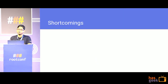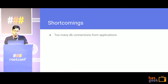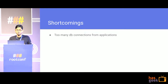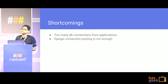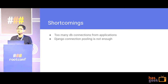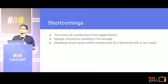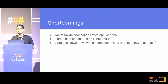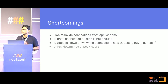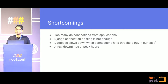However, this model has some shortcomings. Our apps end up making too many database connections. We tried Django connection pooling, but it was not enough — it doesn't scale beyond a single process, let alone multiple servers. Even with Django pooling, we ended up in situations where applications would make too many connections to MySQL. We had a threshold of around 6,000 connections before our DB would start stalling down.